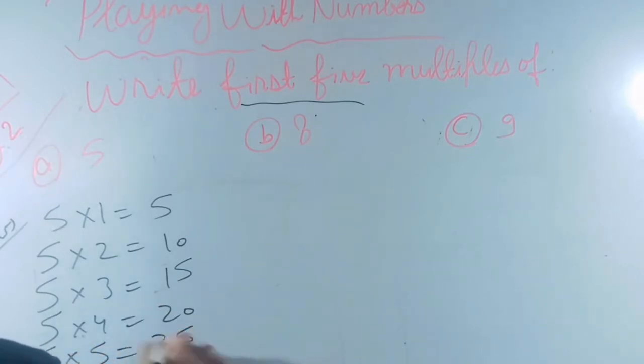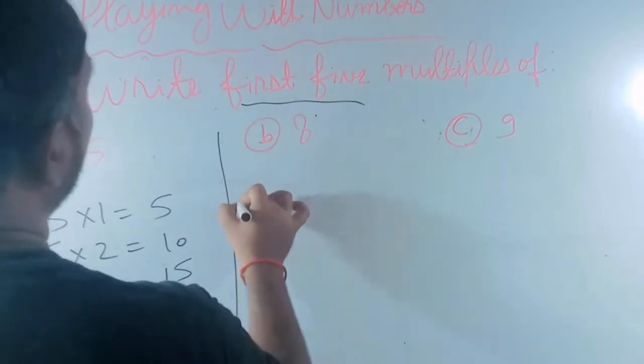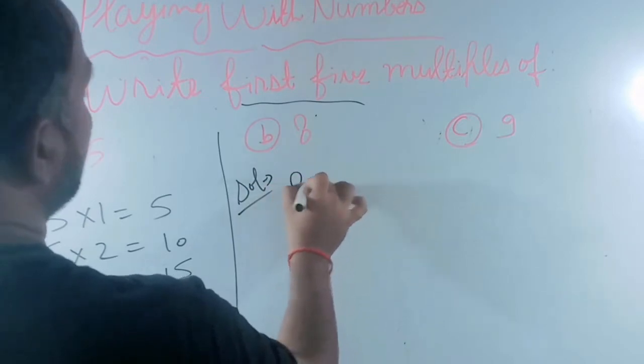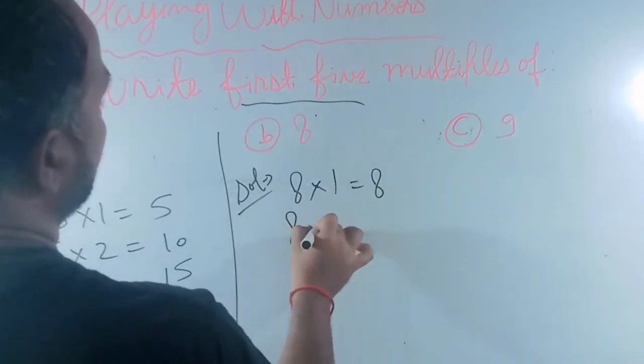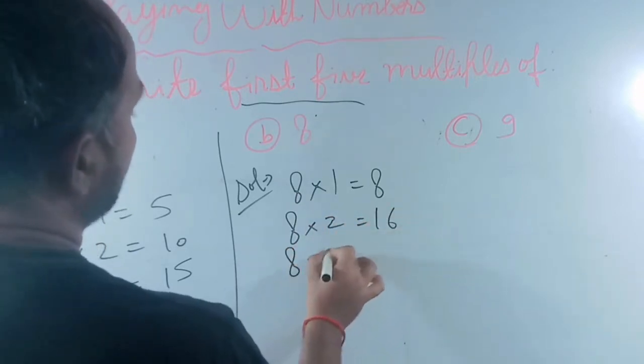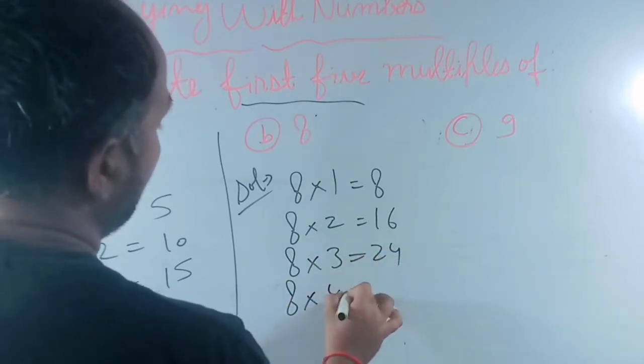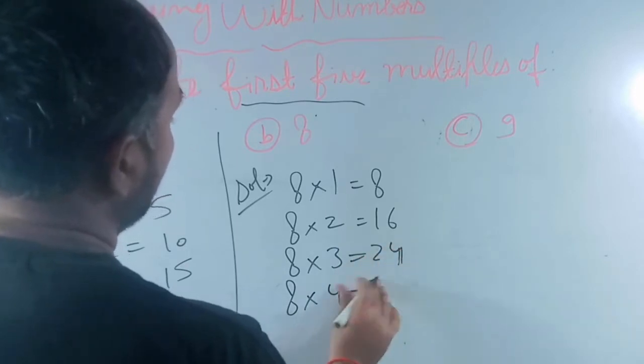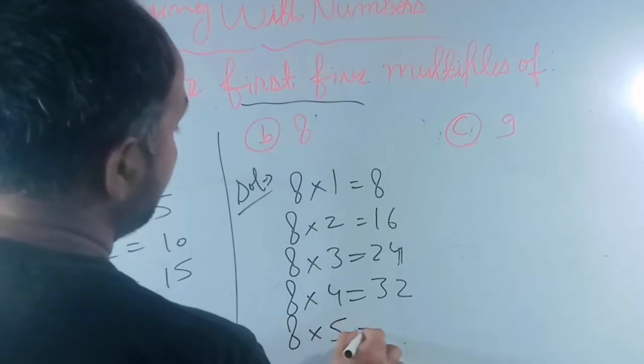Next one, same method here. 8 multiply 1 equals 8, 8 multiply 2 equals 16, 8 multiply 3 equals 24, 8 multiply 4 equals 32, and 8 multiply 5 equals 40.